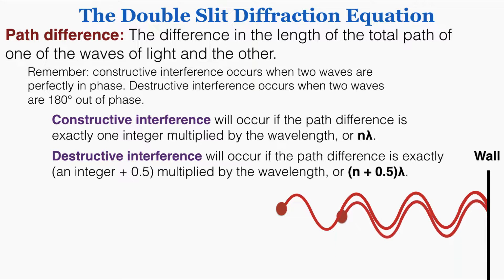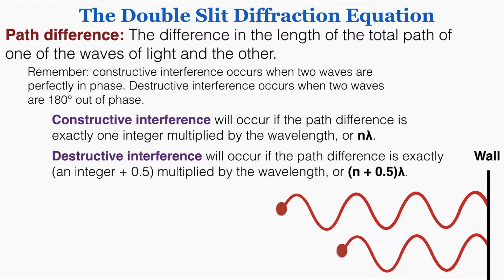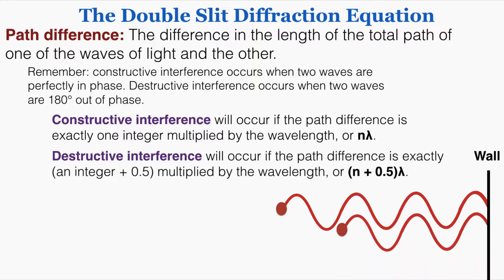These two waves are in constructive interference because they're lined up in such a way when hitting the wall that their crests line up and their troughs line up. If I look at the difference in their path, I can see that the path difference is exactly one full wavelength of the wave — one wave is traveling for one full wavelength longer than the other. So because the path difference is exactly one full wavelength, they line up perfectly to create constructive interference.